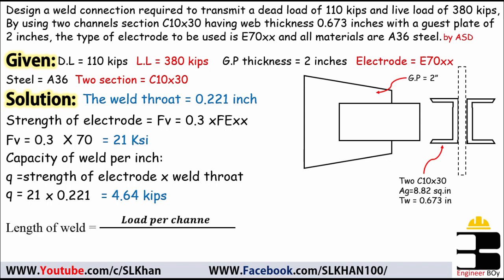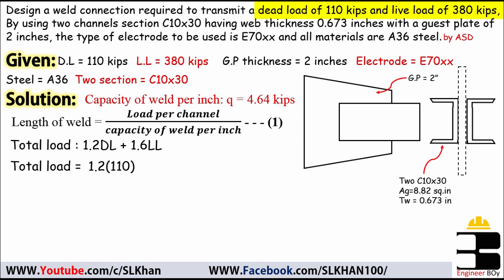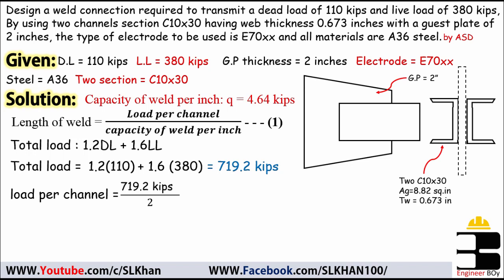Now we approach the weld length calculation: length of weld = load per channel divided by weld capacity per inch. The total factored load = 1.2 × dead load + 1.6 × live load = 1.2 × 110 + 1.6 × 380 = 132 + 608 = 719.2 kips. Since we have two channels, the load per channel = 719.2 / 2 = 359.6 kips.